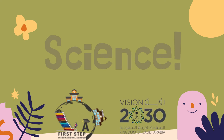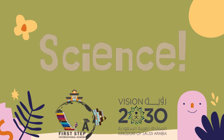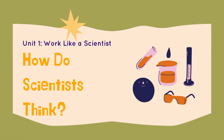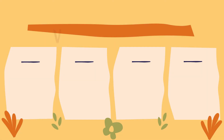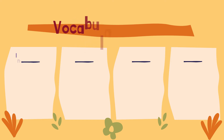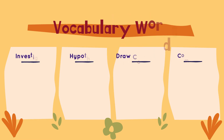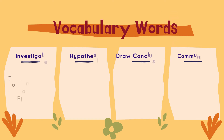Hello kids and welcome to another science video. Today's lesson is: how do scientists think? The vocabulary words for this lesson are investigate, hypothesis, draw conclusions, and communicate. To investigate is to plan and do a test to answer a question or solve a problem.